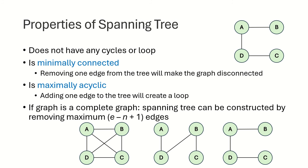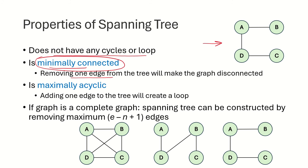The properties of the spanning tree are: first, it does not have any cycles or loops. Second, it is minimally connected — meaning if we remove any further edge from this tree, it will make the graph disconnected. For example, if we remove this edge, the graph becomes disconnected, and if we remove this other edge, the graph also becomes disconnected.